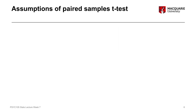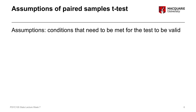Assumptions are certain conditions that need to be met for a particular test to be valid and reasonable. Any time we run a statistical test, each test has a set of assumptions that go along with it. It's really important to check the assumptions of the particular statistical test you're using to make sure you're not making a mistake or doing something unreasonable. Assumptions help us know which kind of test is appropriate in what circumstance.